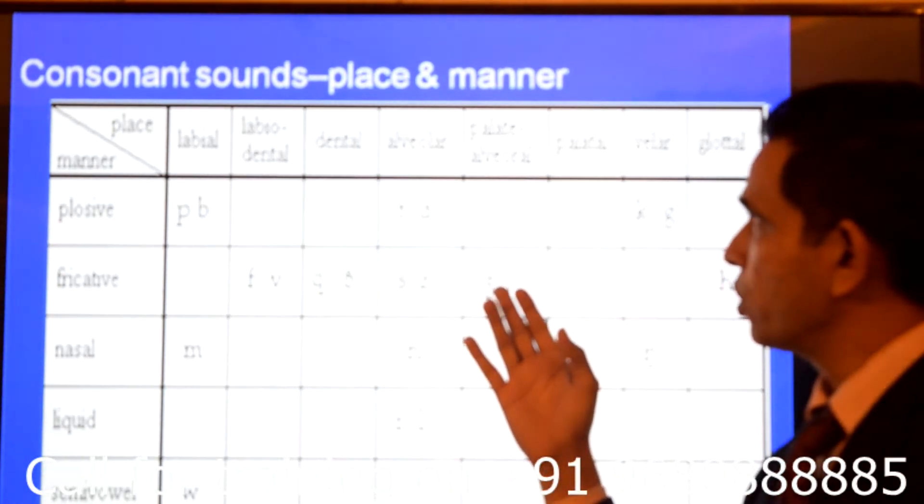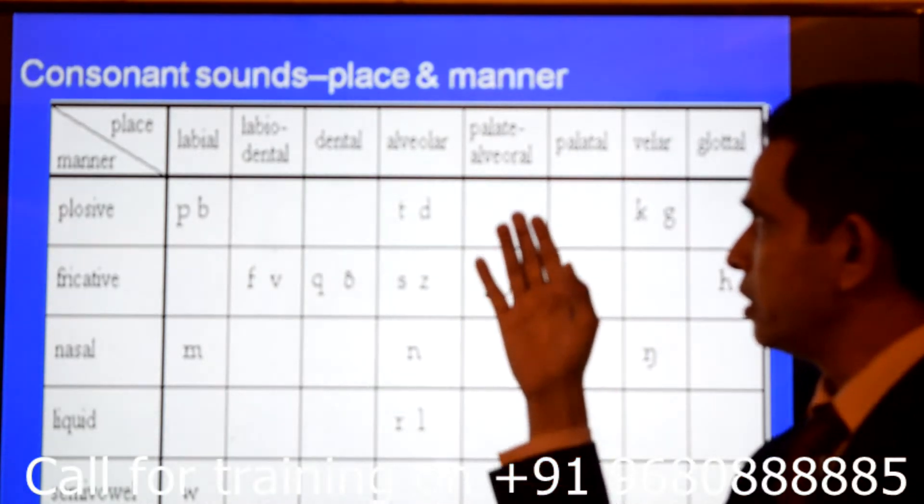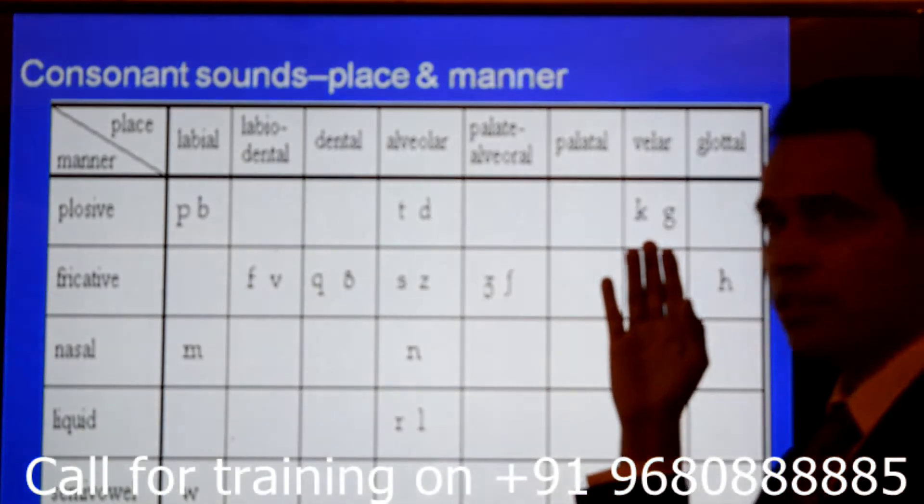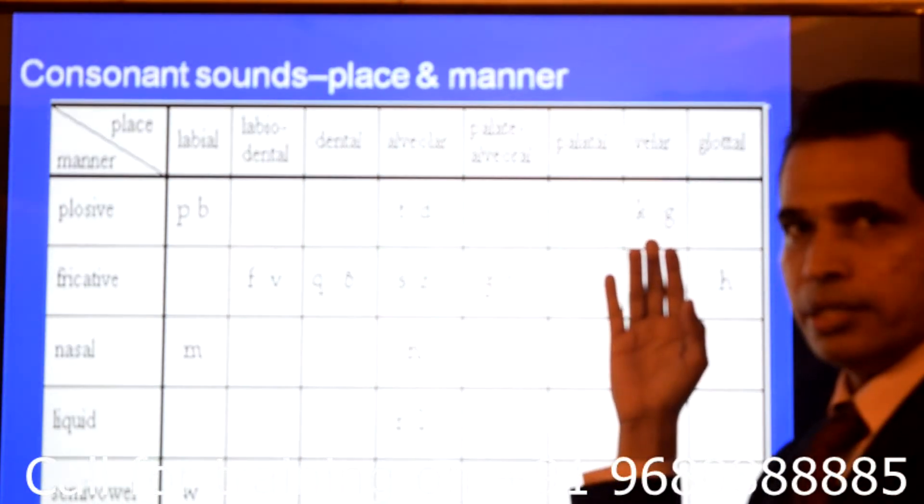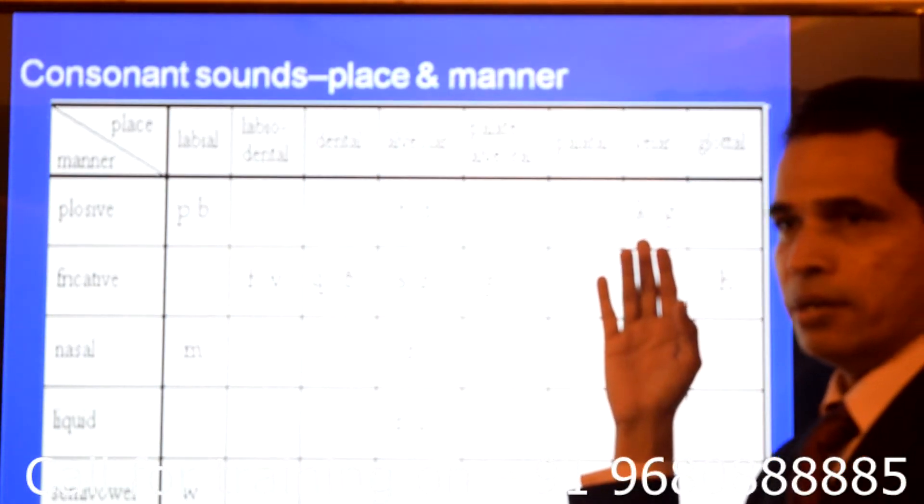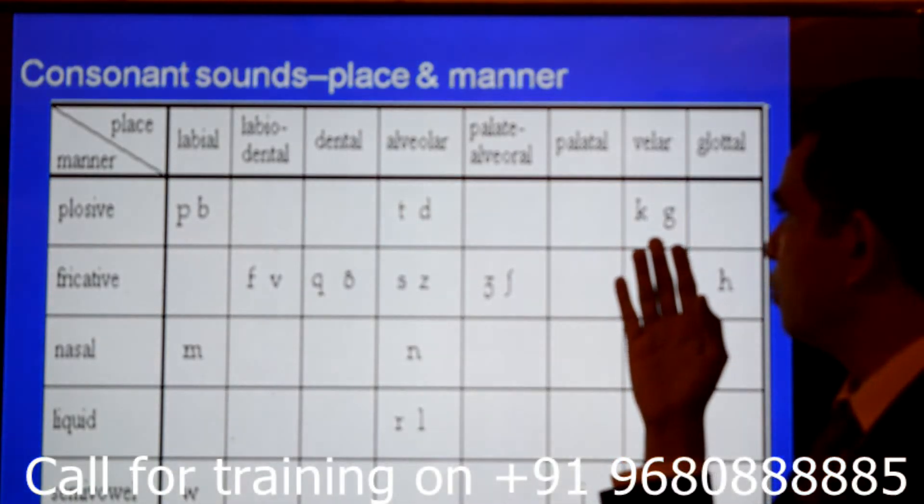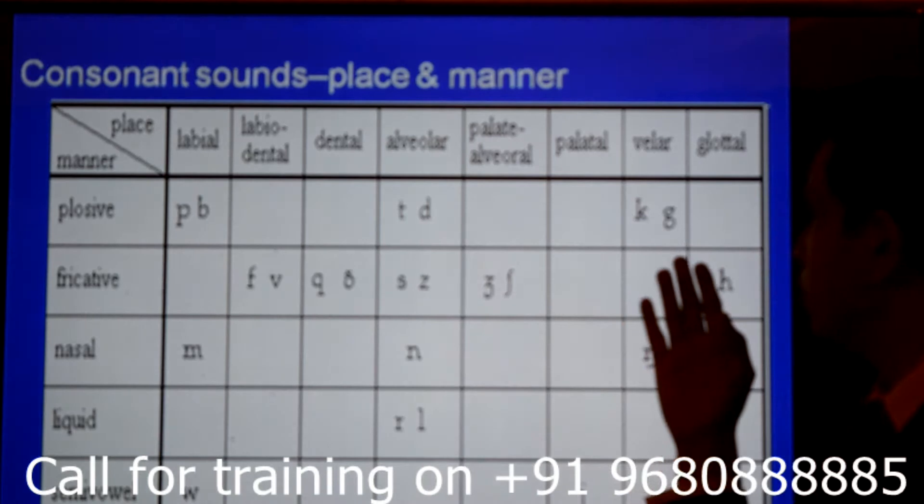Then comes ra and sh. These are palliative alveolar. Then comes kh and gur. These are vala. Kh and gur. This is produced in the end of the mouth. We can see it in the mouth. We can see it in the mirror.